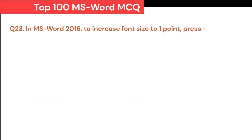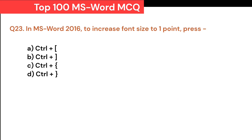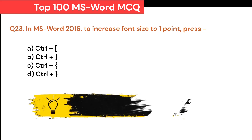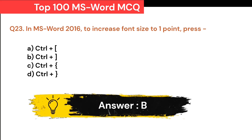In MS Word 2016, to increase font size by one point, press: A. Ctrl+[ (Left Square Bracket). B. Ctrl+] (Right Square Bracket). C. Ctrl+{ (Left Curly Bracket). D. Ctrl+} (Right Curly Bracket). Correct answer is B. Ctrl+] (Right Square Bracket).